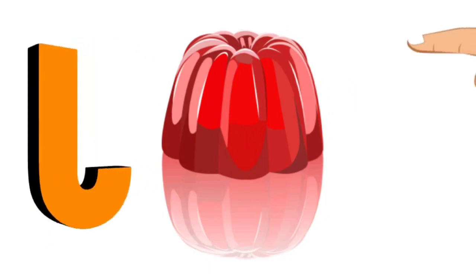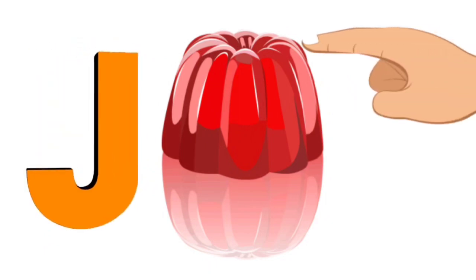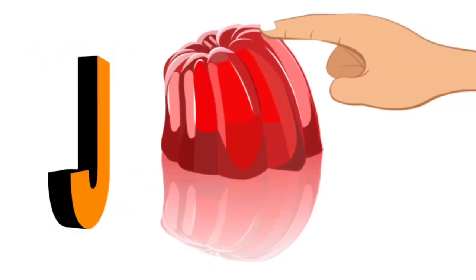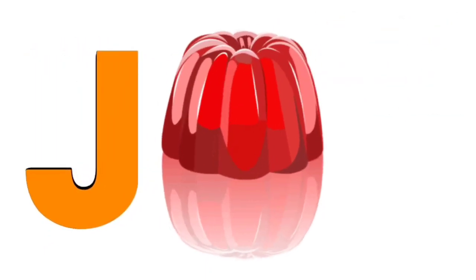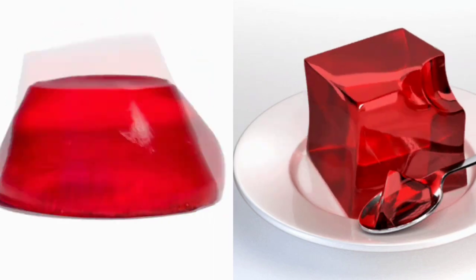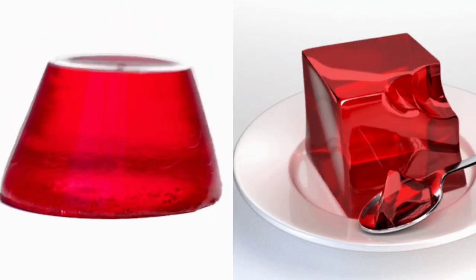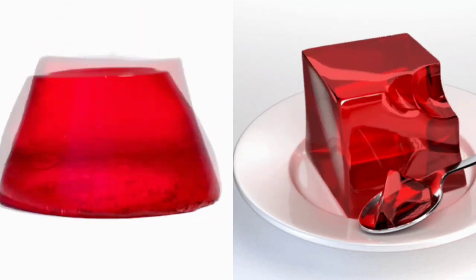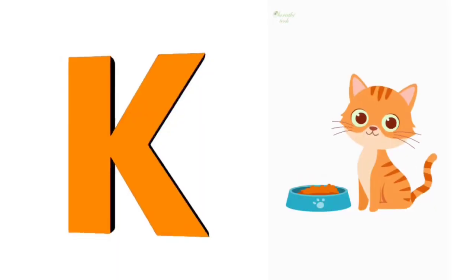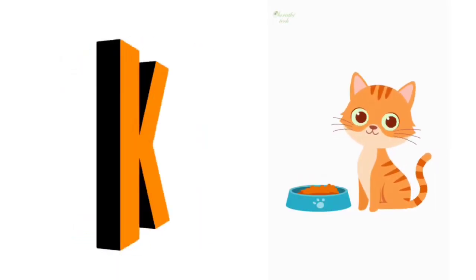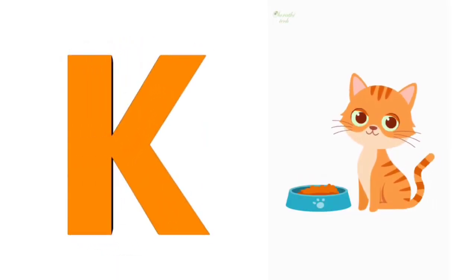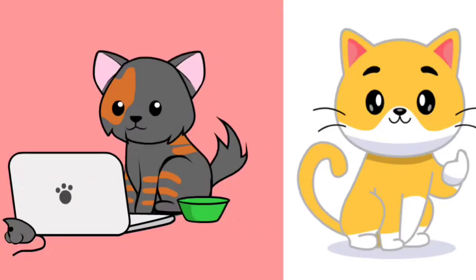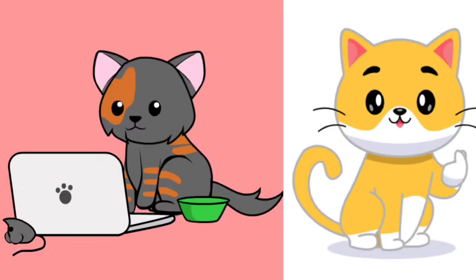J is for Jelly. G, G. Jelly. J is for Jelly. G, G. K is for Kitten. K, K. Kitten. K is for Kitten. K, K.